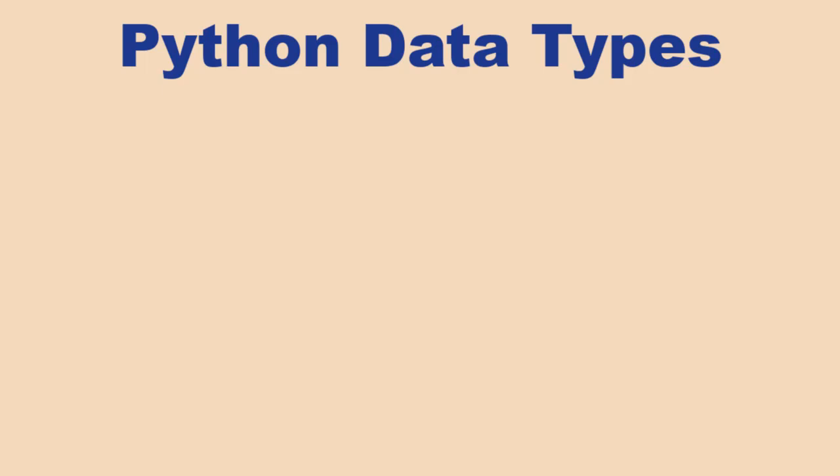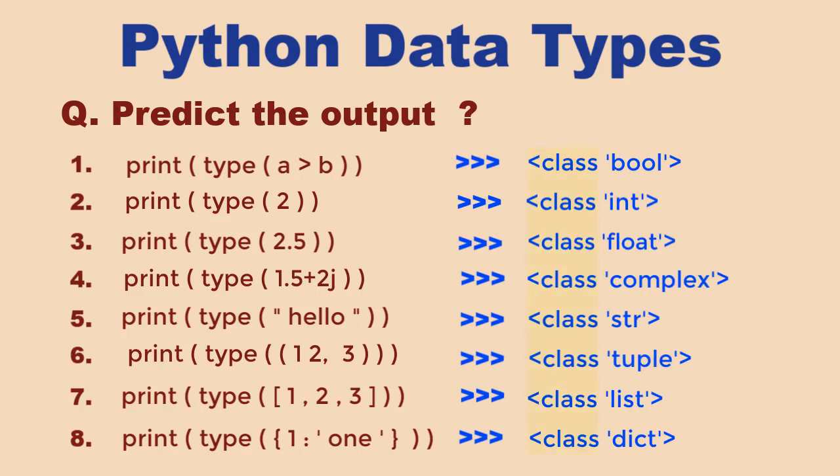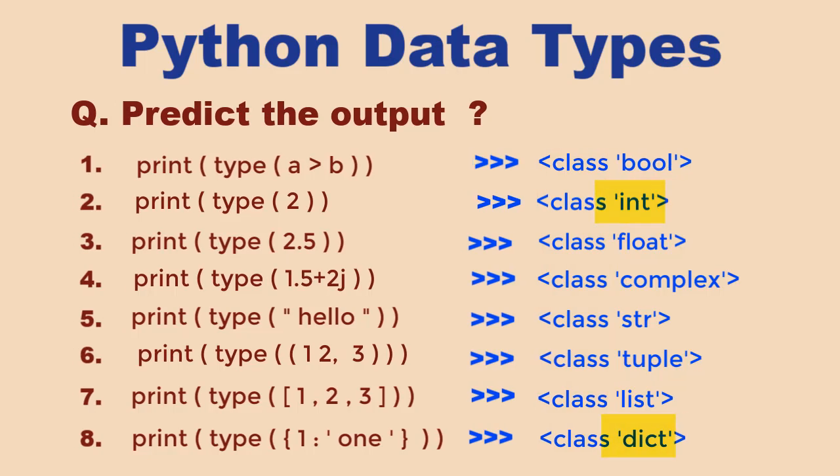You can be asked to predict the output. Like here, we are printing the output of type. Do note the complete output it gives, and don't forget to write the class with the given format before type. Also note the correct names given for each type: like number is int, not integer; dictionary is dict.